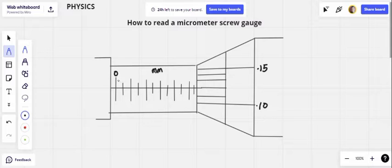Now recall each of the calibrations on this main scale is 0.5 millimeters. So if this first one is 0, this one will be 0.5, this next one will be 1 millimeter, then 1.5 millimeters, 2 millimeters, 2.5, 3 millimeters.